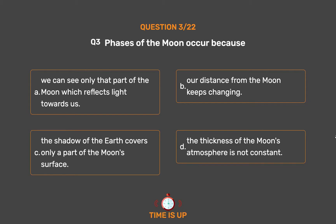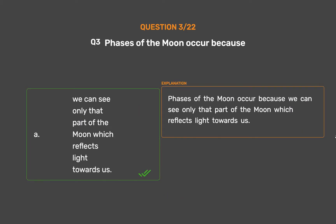The correct answer is Option A. Phases of the Moon occur because we can see only that part of the Moon which reflects light towards us.